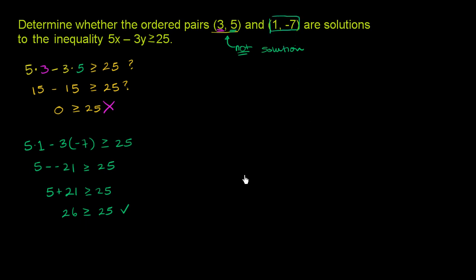And just to see if we can visualize this a little bit better, I'm going to graph this inequality. I'm not going to show you exactly how I do it this time, but I'm going to show you where these points lie relative to this solution. So first, let's put this in slope-intercept form. We have 5x minus 3y is greater than or equal to 25.